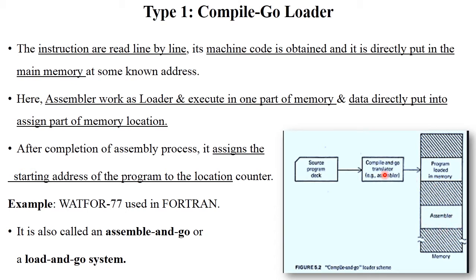Here, in memory the assembler is present, working as a loader. The assembler translates the source program into the object file, and this object file is directly placed into the memory location. After completion of the assembly process, it assigns the starting address of the program to the location counter. This system is also called the 'assemble and go' or 'load and go' system, generally used in Fortran language with the loader named VAT477.